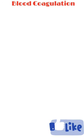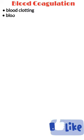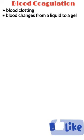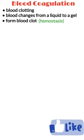Blood coagulation, also known as clotting, is the process by which blood changes from a liquid to a gel, forming a blood clot by a process known as hemostasis.